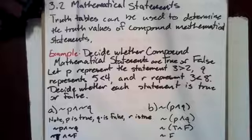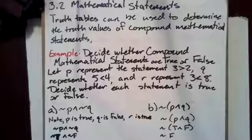In B, we have not of P and Q. That means we have not of true and false, which is not false, which is true.